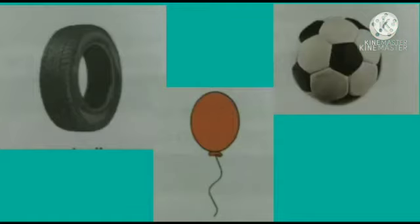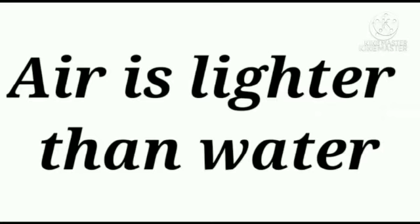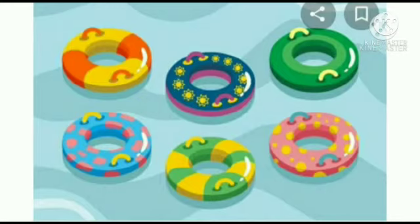Things like tires, balloons, and footballs get their shape only after we fill them with air. Air also helps clothes to dry faster, and air helps boats to sail. Air is lighter than water because things filled with air float on water. That is why swimming tubes help us to float on water.